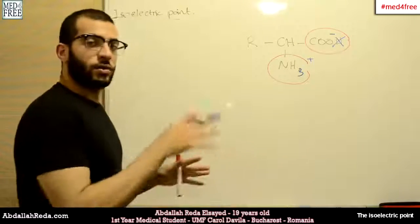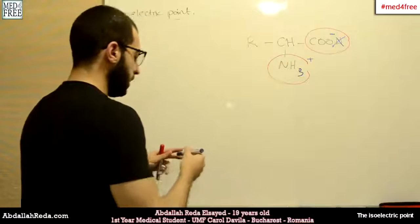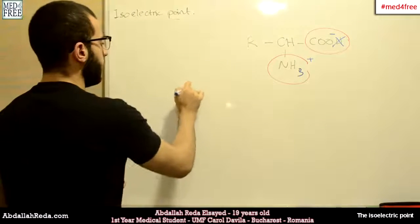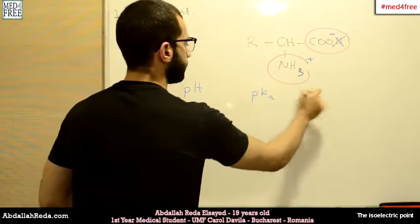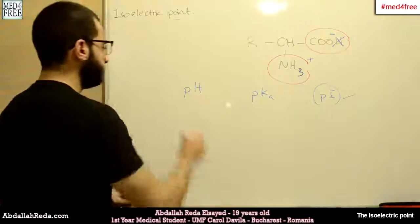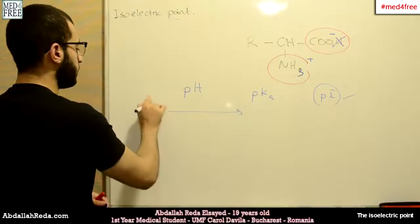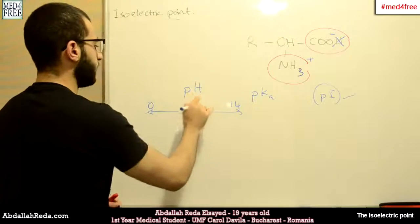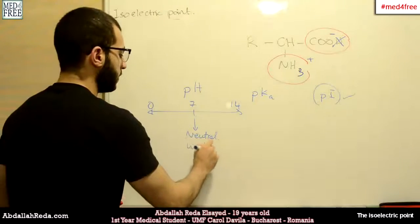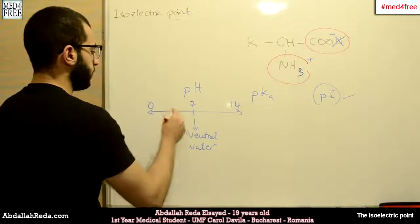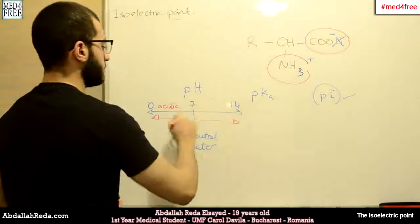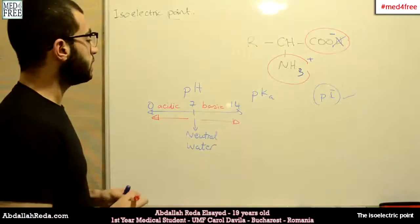The pH of the surrounding medium will determine this type of ionization. We have to learn three terms: pH, PKA, and PI. The pH is a scale from 0 to 14, and at the midpoint we have 7, which is considered neutral like water. If we go towards 0 the substance becomes more acidic, and if we go towards 14 the substance becomes more basic or alkaline.